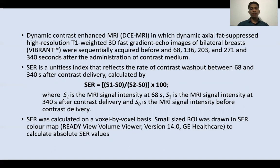SER is a unitless index that reflects the rate of contrast washout between the early phase and the delayed phase after contrast delivery, calculated by the formula shown here, where S0 is the signal intensity before contrast administration, S1 is the signal intensity at 68 seconds, and S2 is the signal intensity at 340 seconds after contrast delivery. SER was calculated on a voxel-by-voxel basis with a commercial computer-aided detection system, which generated a SER color map, and a small region of interest was drawn in the SER color map to calculate the absolute SER values.